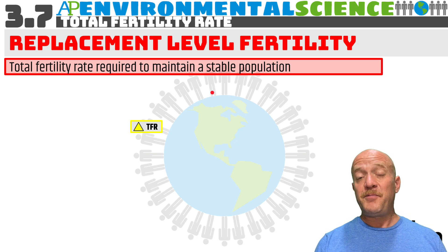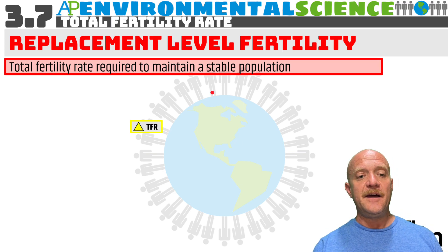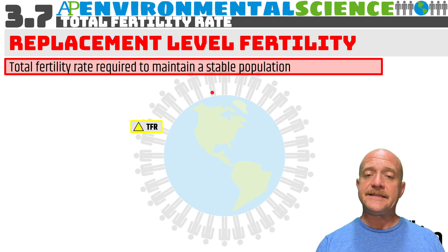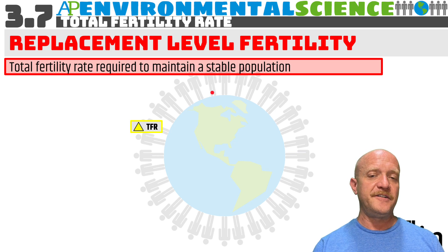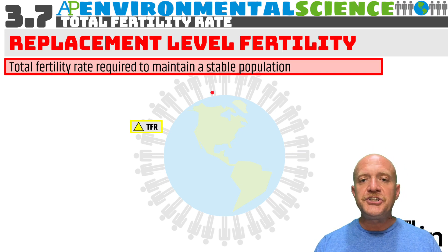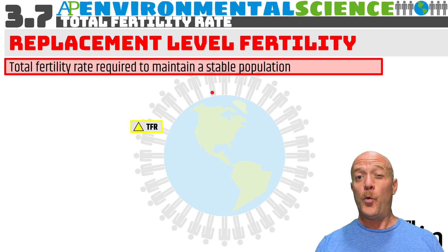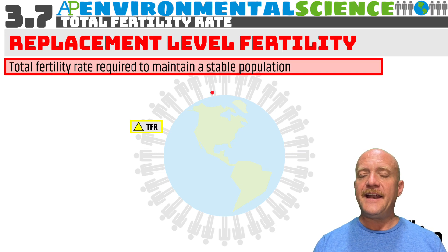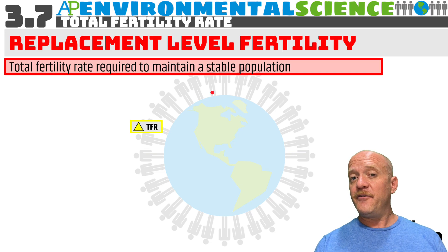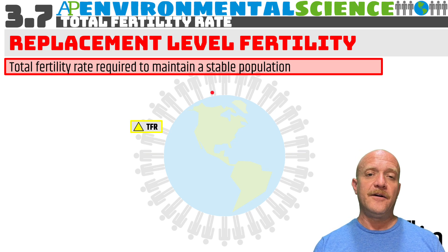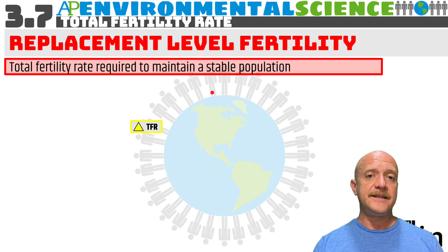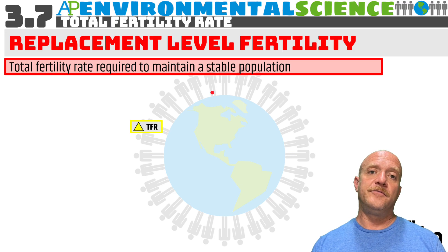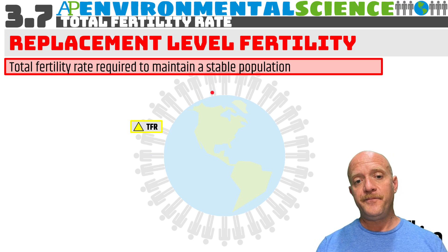Replacement level fertility is the number of children required to maintain a stable population. Globally, the replacement level fertility should be around 2.1. The reason for that is not everyone has a baby, not everyone is able to have a baby, and not everyone lives to reach reproductive age. So in order to replace the human population, the global replacement level fertility should be around 2.1.